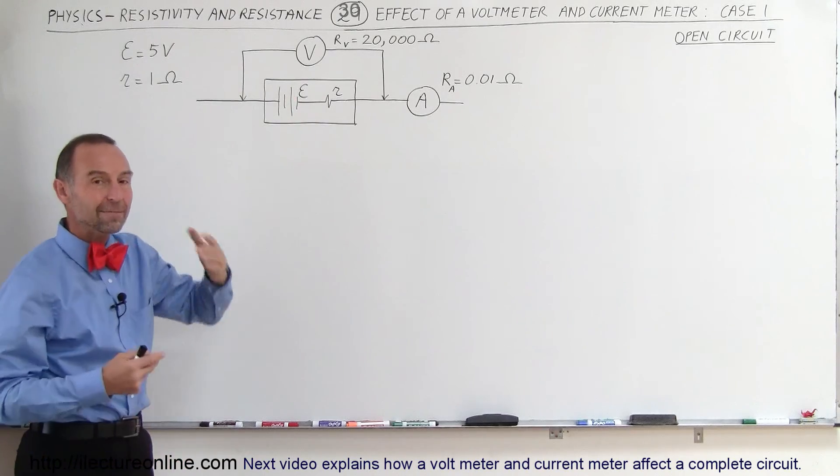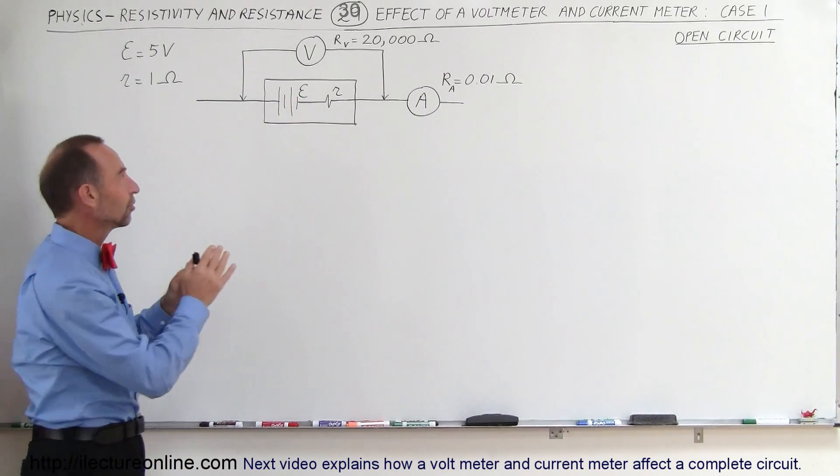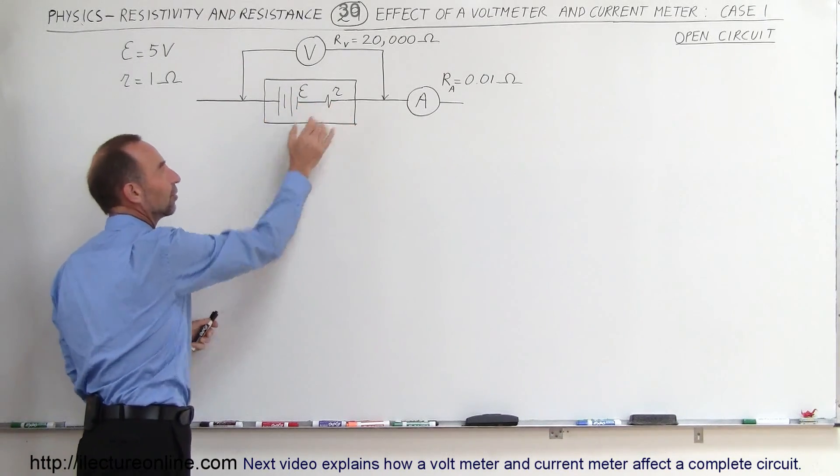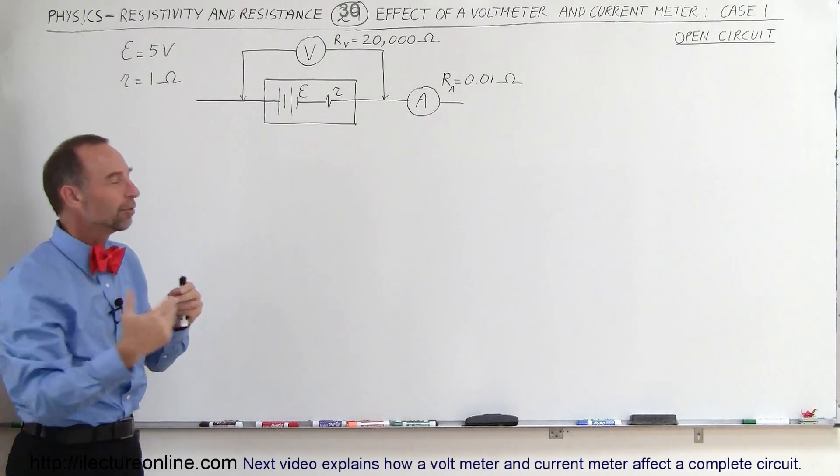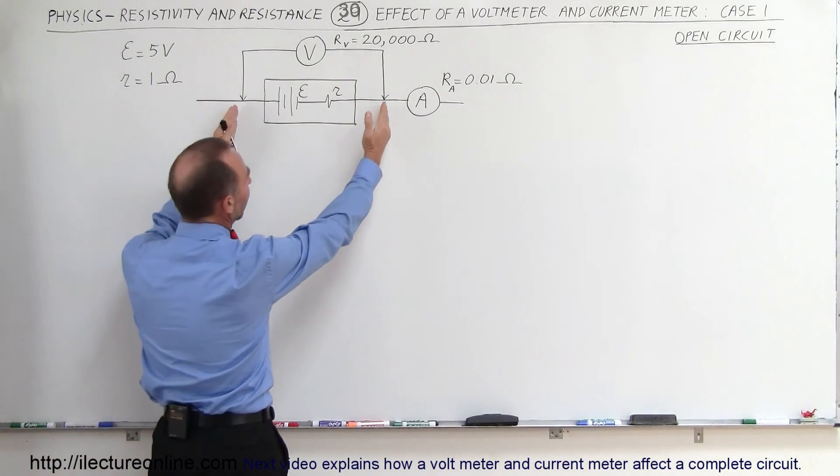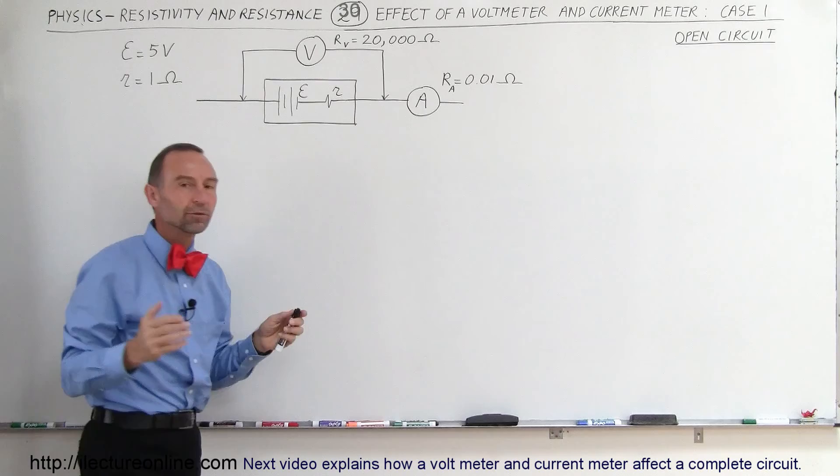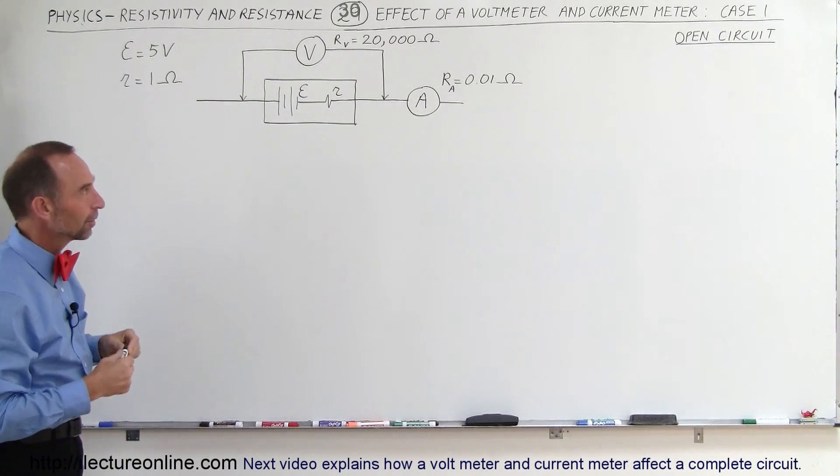The E here stands for the EMF, the electromotive force, the voltage that the battery provides. Internal resistance will take away some of the voltage if there's a current flowing through it. And we measure the terminal voltage from one end of the battery to the other end of the battery.